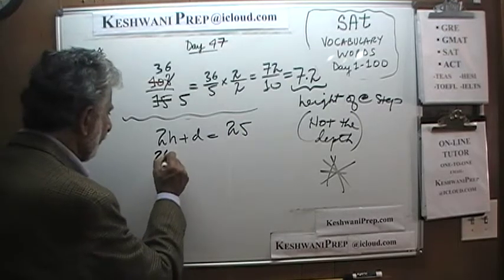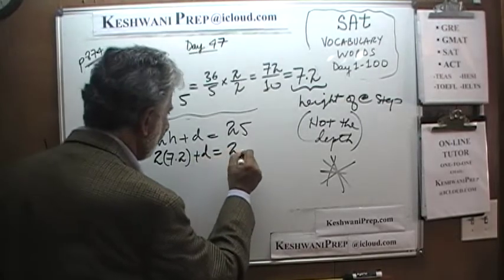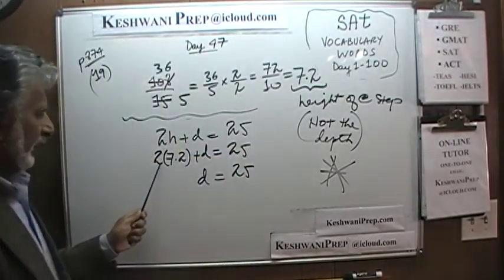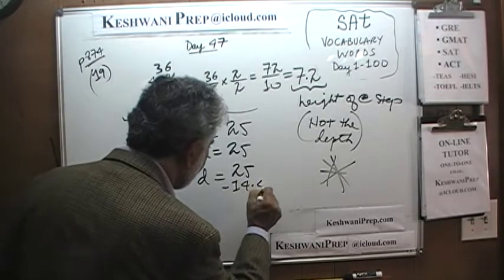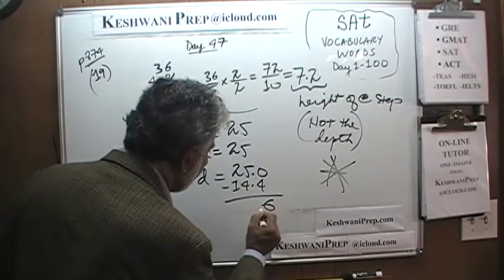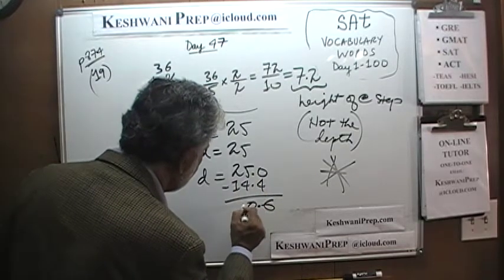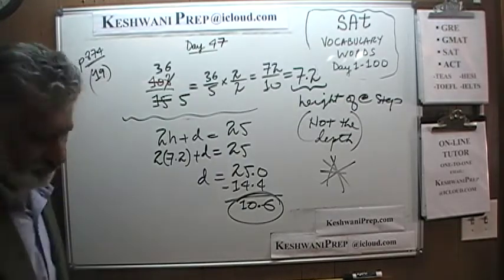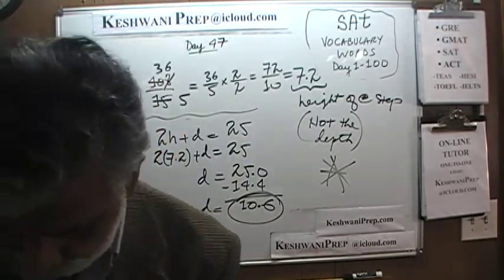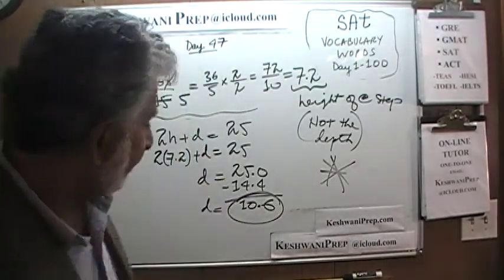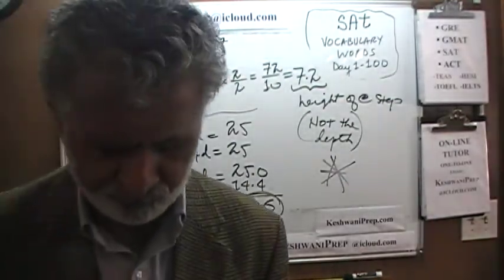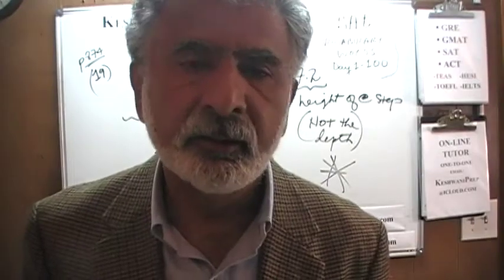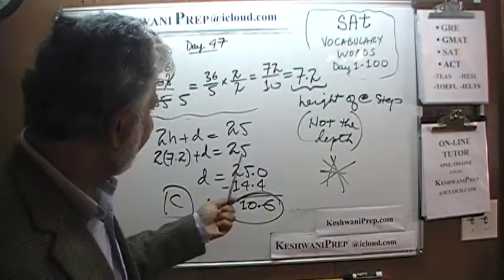So 2 × 7.2 + d = 25, which gives d = 25 − 14.4 = 10.6 inches. The depth of each step needs to be 10.6 inches. That is the answer to number 19. As you can see, there is a world of difference between the work required for number 17 and number 19.